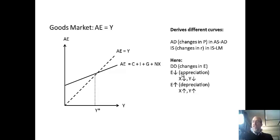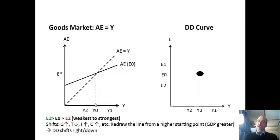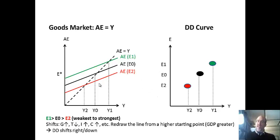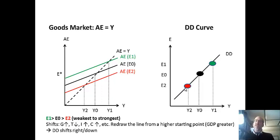If you appreciate the currency, exports will drop and equilibrium GDP will drop. If you depreciate the currency, exports rise and equilibrium rises. These combinations go in the same direction, which gives an upward sloping curve. Starting with E0 as our baseline and Y0 as the first GDP: with a weaker currency we get higher aggregate expenditure and higher equilibrium GDP; with a stronger currency we get a lower GDP. We can do this for all points in between and get an upward sloping DD curve. These are all potential equilibrium points where income equals spending.